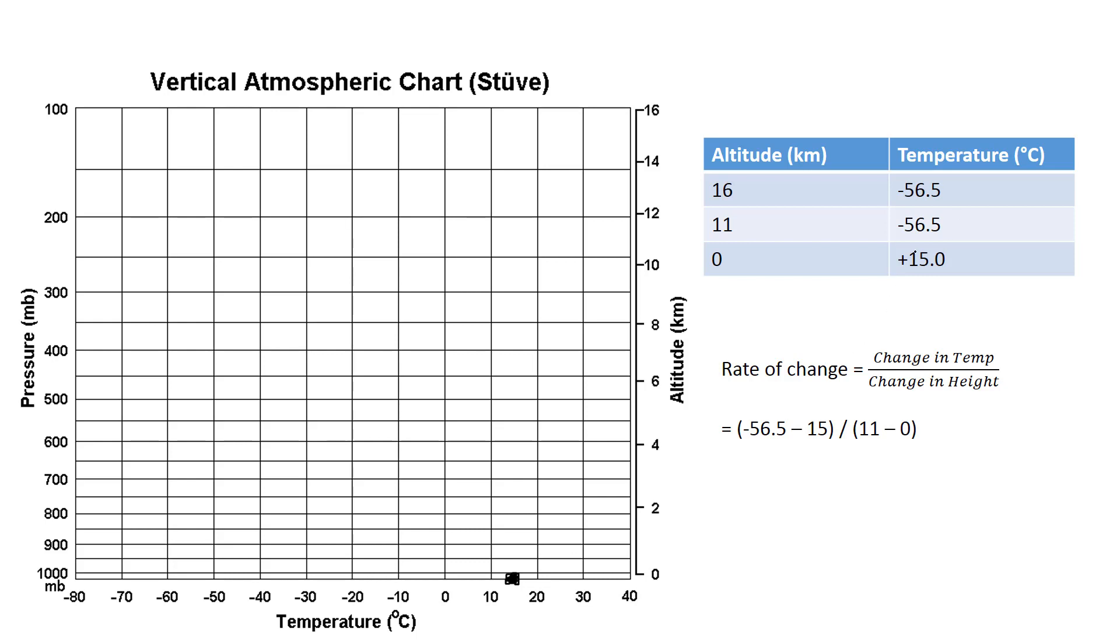The second dot is at 11 kilometers and negative 56.5 degrees Celsius. So, I go up to 11 kilometers, it's going to be halfway between 10 and 12. And then I travel over, and you kind of just eyeball it. I'm not going to be too stingy on, you know, is this perfect or not. And then, again, place a dot right there.